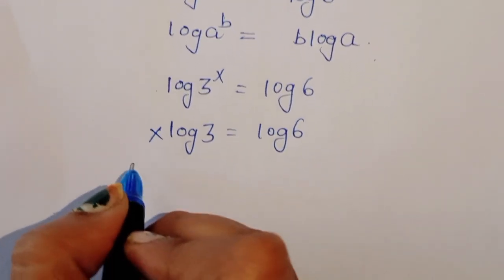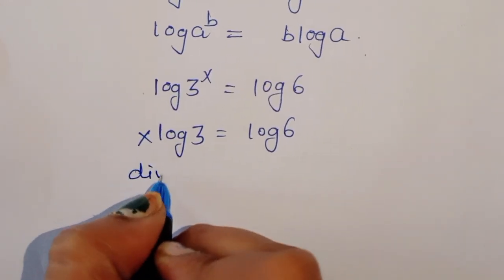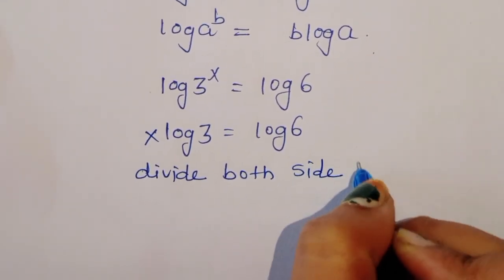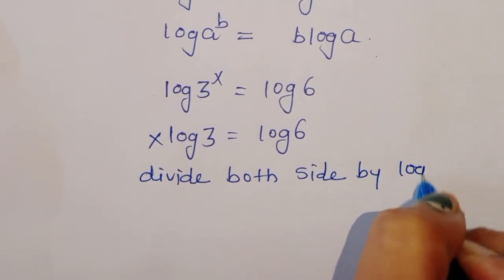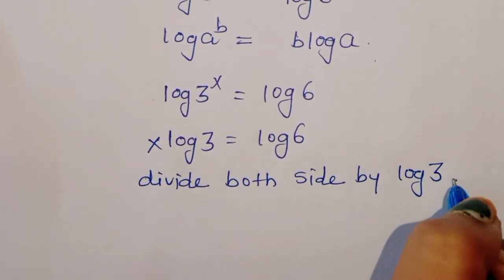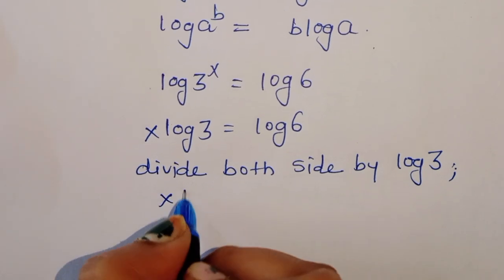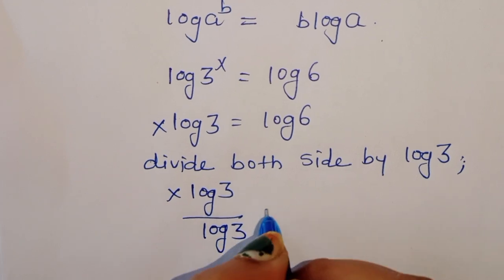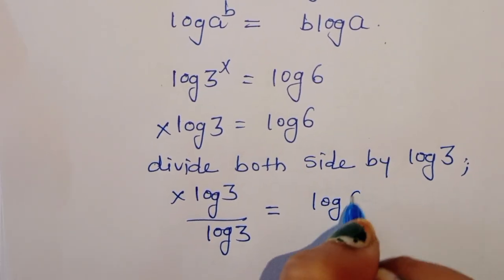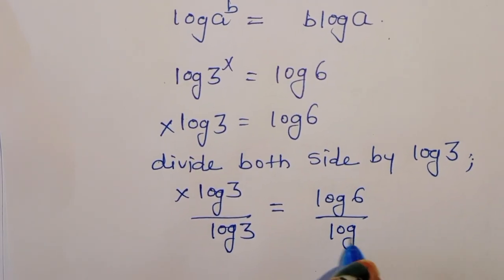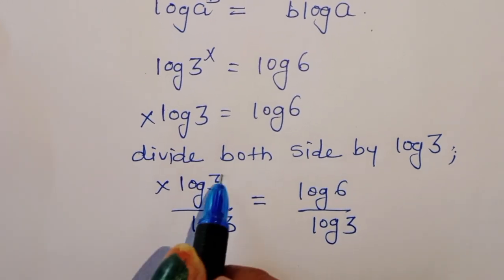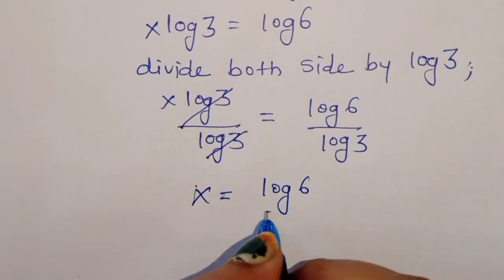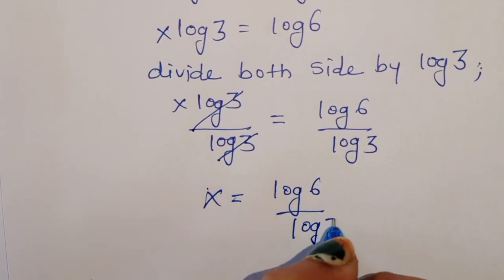Now we can divide both sides by log of 3. Then we will get x times log of 3 divided by log of 3 is equal to log of 6 divided by log of 3. This cancels, so x is equal to log of 6 divided by log of 3.